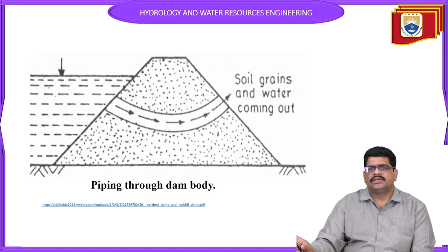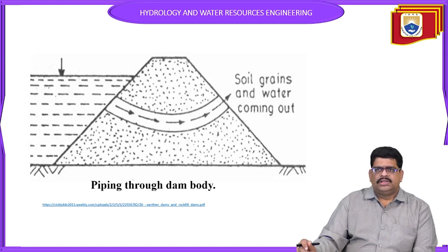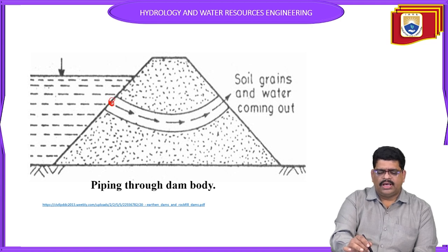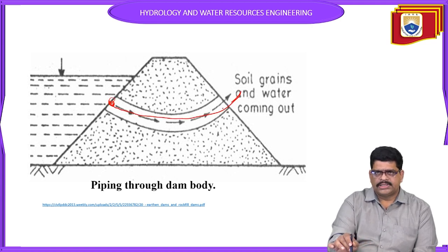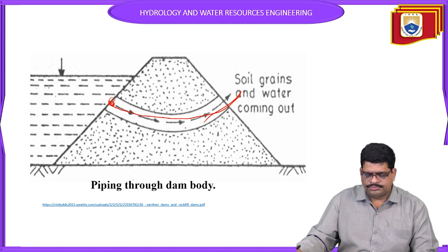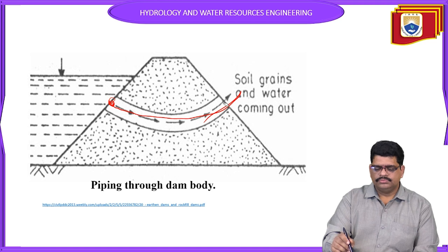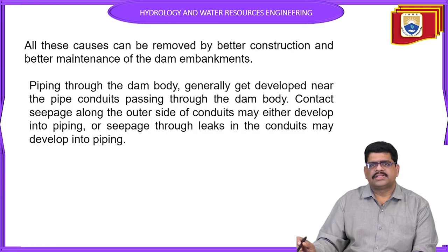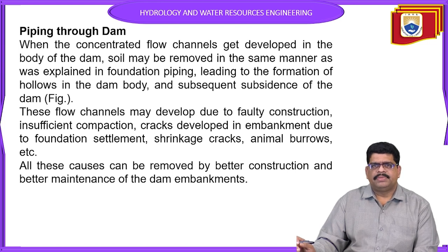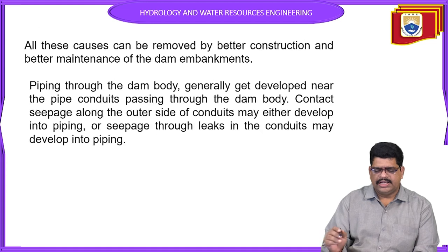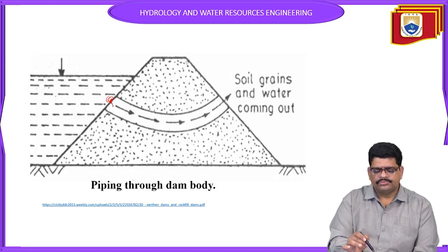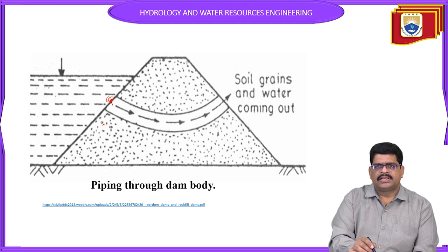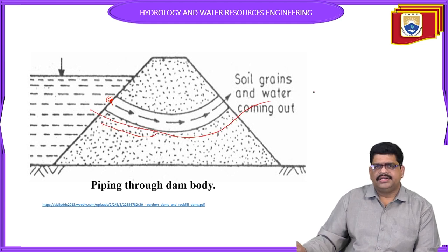Piping through the dam: inside the dam body, water can also travel from one side to the other through weak areas. Any hollows seen in the top of the dam allow water to flow automatically from one side to the other. This is called piping through the dam. The process of slogging on the downstream side causes it to become saturated or get eroded.